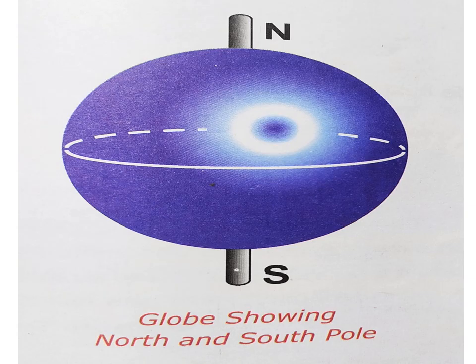You all know the earth is like a ball, which means that it has no top, bottom, sides, or corners. So without any point of reference, it is really difficult to find the location of a place as well as its direction. To overcome this difficulty, we take the help of a globe.